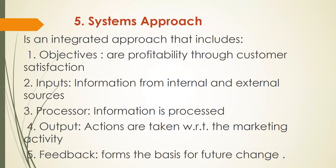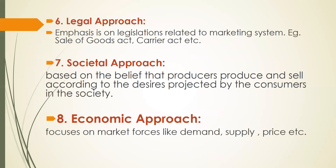Information needs to be processed, and the output is the actions taken with reference to marketing activity. No system is complete without a feedback loop. The feedback becomes the basis for all future decision-making and adapting to changing circumstances. In the systems approach, the objective comes first, followed by the three elements — input, process, and output — completed by a feedback loop.